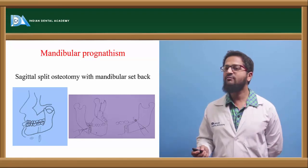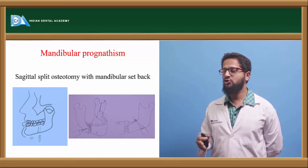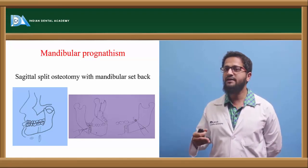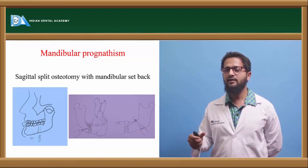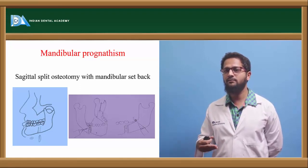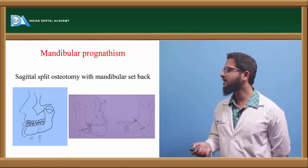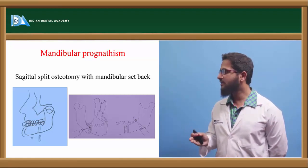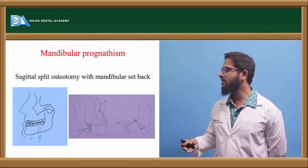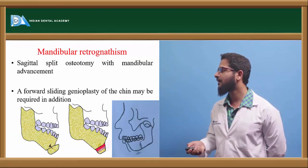In case of mandibular prognathism, such as class III patients, sagittal split osteotomy is done — mandibular setback is performed, the required amount of bone is removed, the mandible is positioned properly, and splinting with screws and plates is done. The diagram shows how the sagittal split osteotomy is performed, the bone is removed, and the mandible is repositioned to its correct relationship.